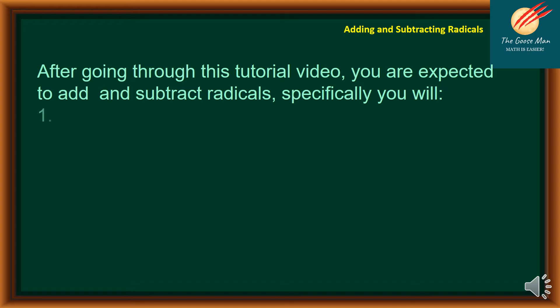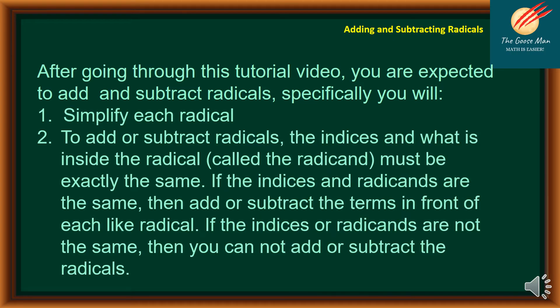Specifically, you will simplify each radical. Number two, to add or subtract radicals, the indices and what is inside the radical — called the radicand — must be exactly the same. If the indices and radicands are the same, then add or subtract the terms in front of each like radical. If the indices or radicands are not the same, then you cannot add or subtract them — simply copy the radical.